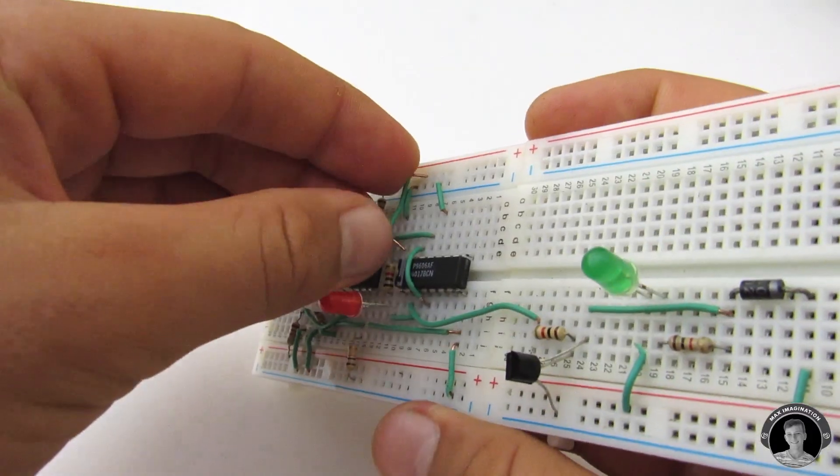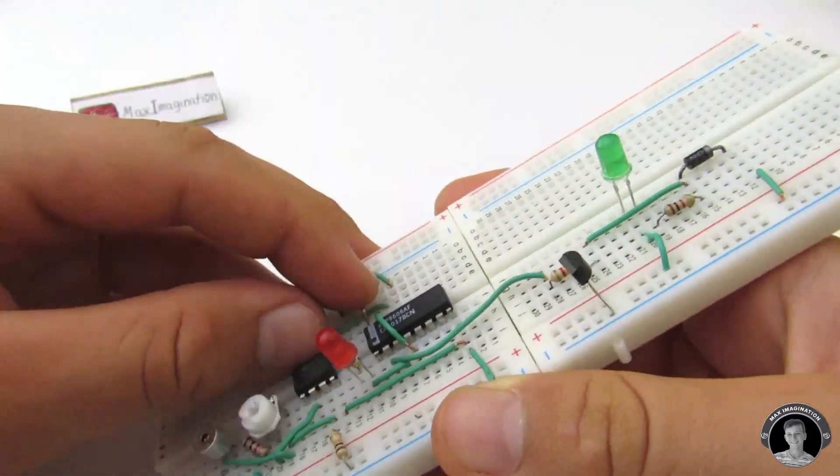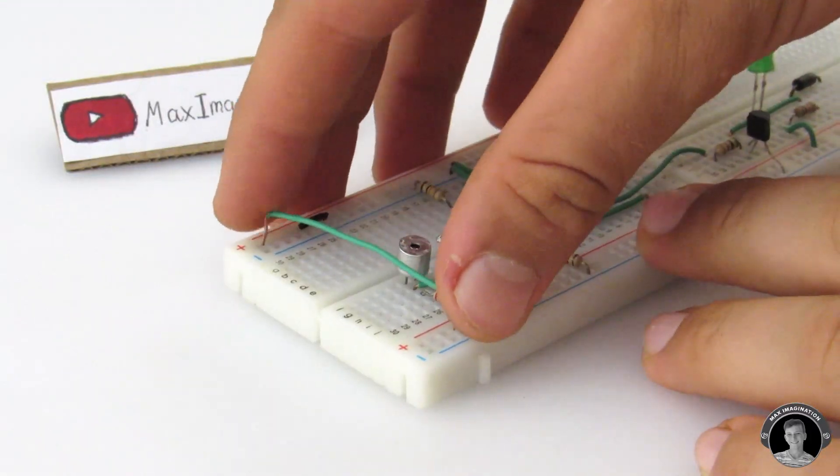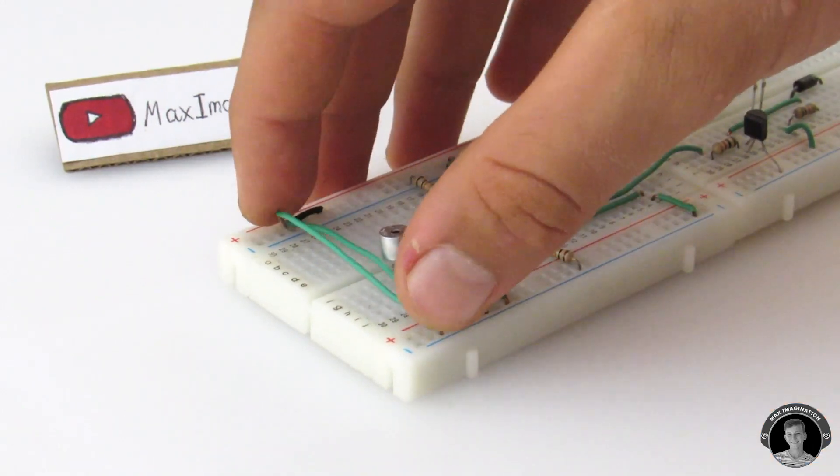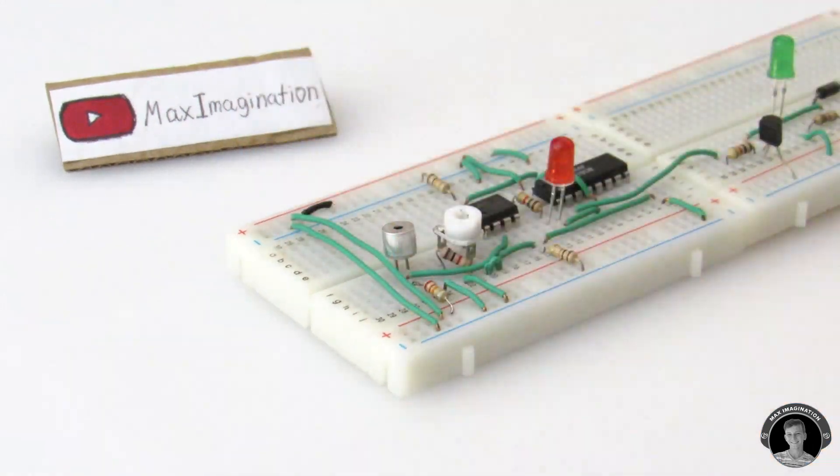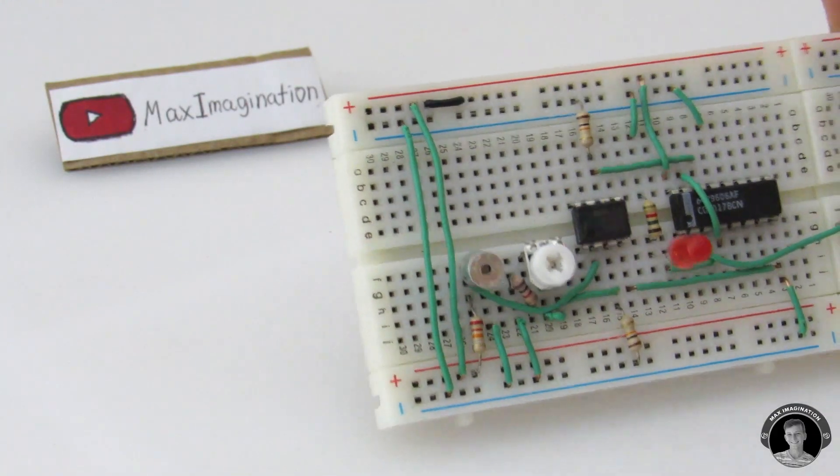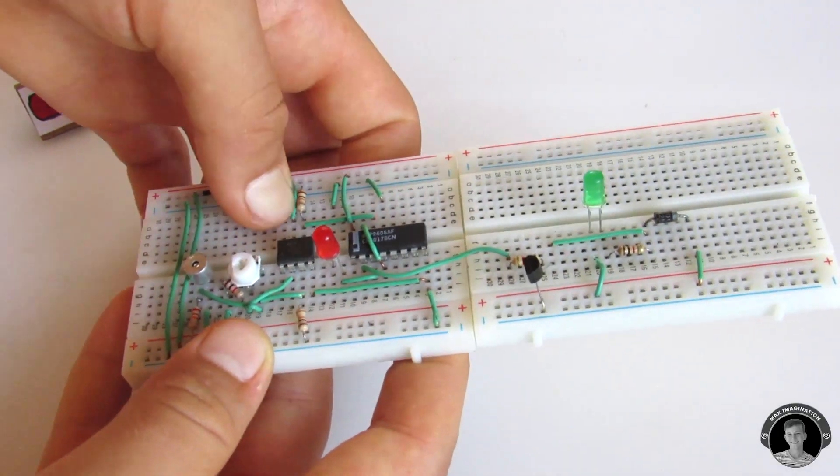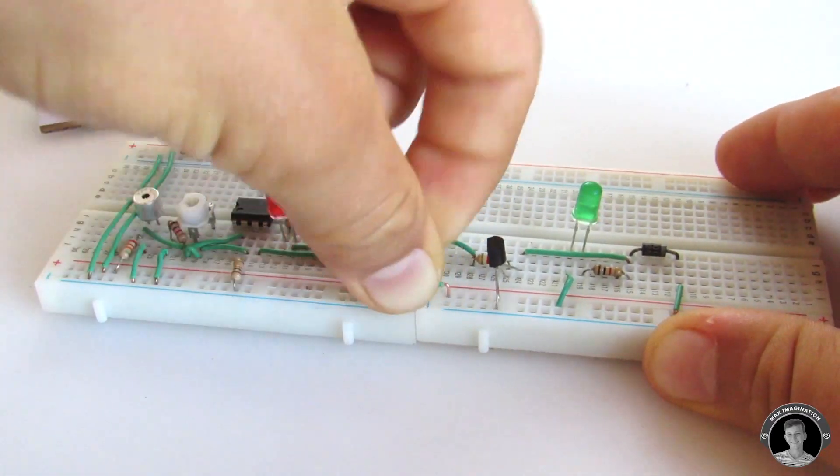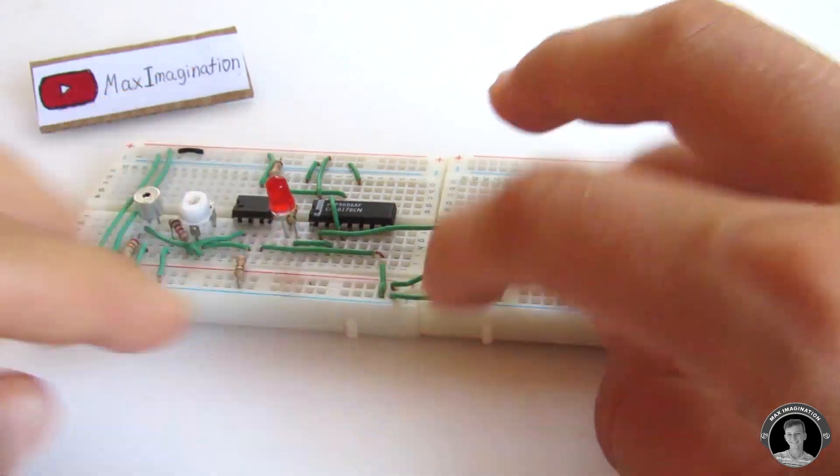A 1K resistor connects the middle pin of the BC547 transistor to pin 2 of the Decade counter. Pin 16 of the Decade counter chip connects with the positive rail. Now it's time to connect the upper positive rail with the lower positive rail and vice versa with the ground rails. Pin 7 of the op amp IC connects with the positive rail. Since my breadboard consists of two adjoined breadboards, I better bridge the connections.